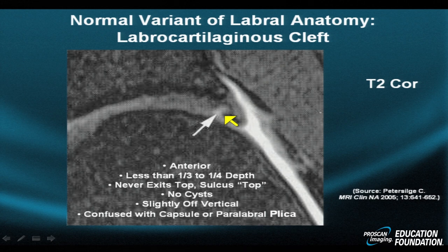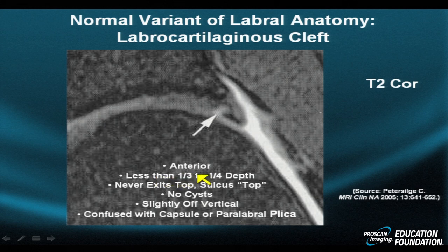One often sees a thin rim of fibrocartilaginous hypointensity around it. Not so in cases of traumatic labral tear. The traumatic labral tear is often more knife-blade-like, is associated with swelling, is often anterior, and is more than a third to a fourth of the depth of the labrum — often a half to three-quarters the depth. While the sulcus never exits the top, a true tear exits the top commonly.